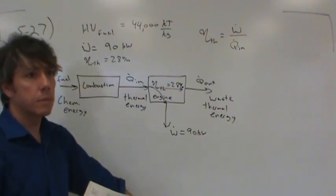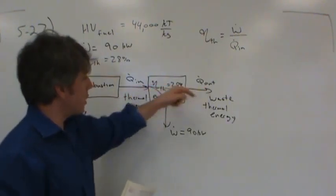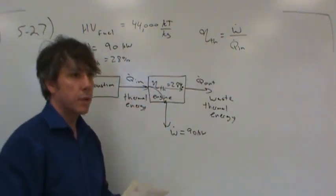72%. If I did the math correctly, 72 and 28 should be 100. So 72% comes out as waste, 28% comes out as work.